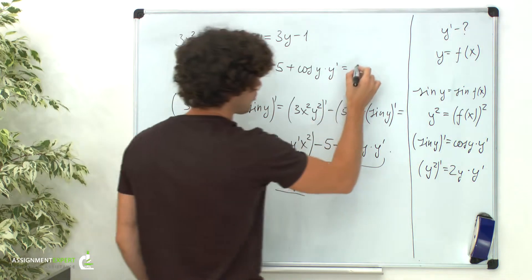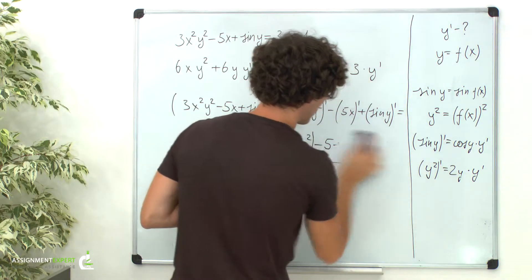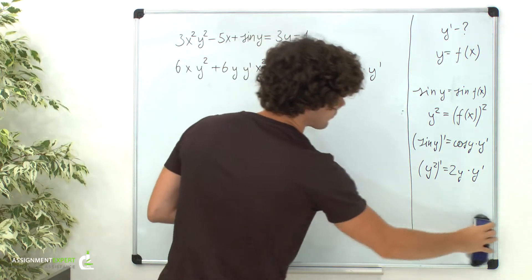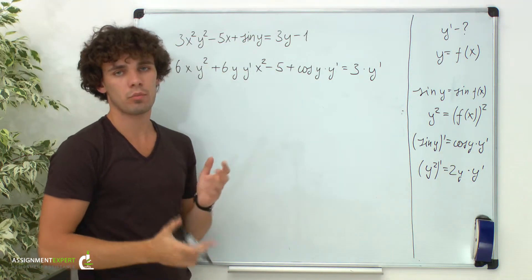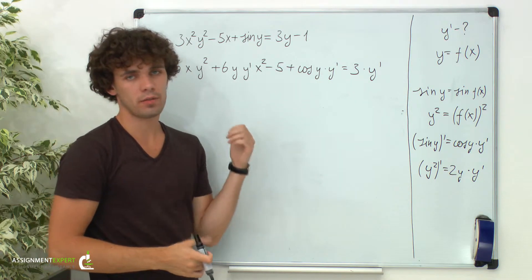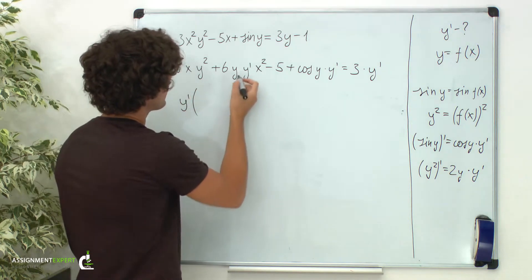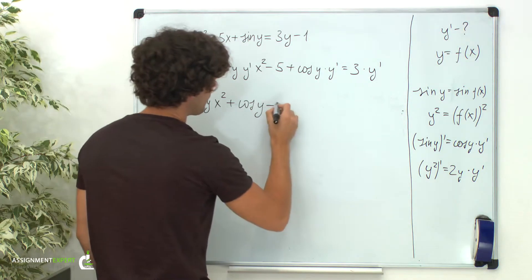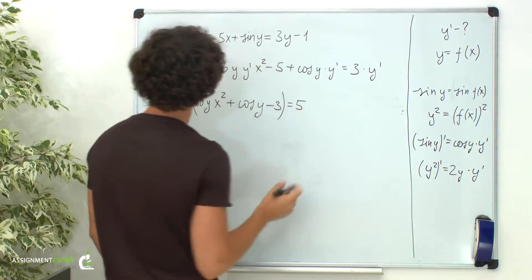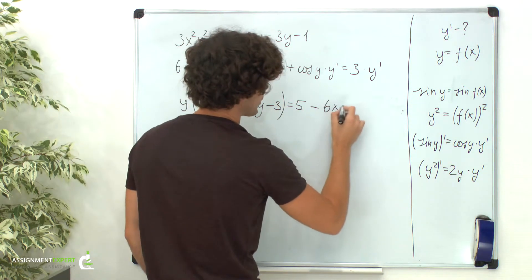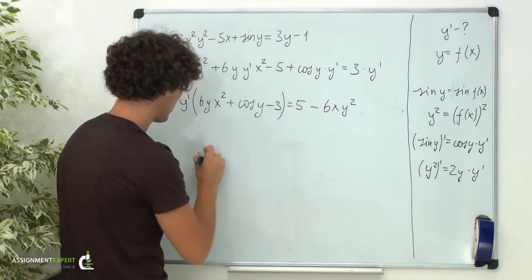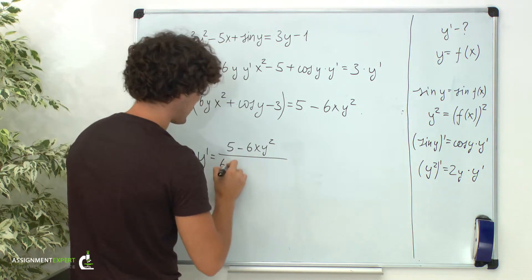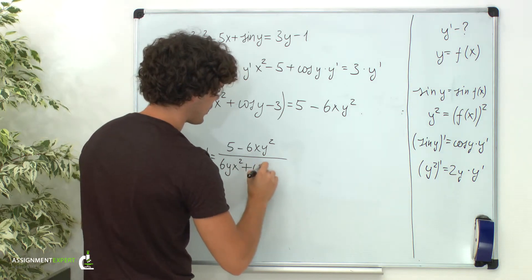And it is equal to 3 times y prime. To find the required derivative, let's solve this expression for y prime. Let's move all the terms with y prime to the left part. y prime times (6y times x squared plus cosine of y minus 3) equals 5 minus 6x times y squared. So y prime equals (5 minus 6x times y squared) over (6y times x squared plus cosine of y minus 3).